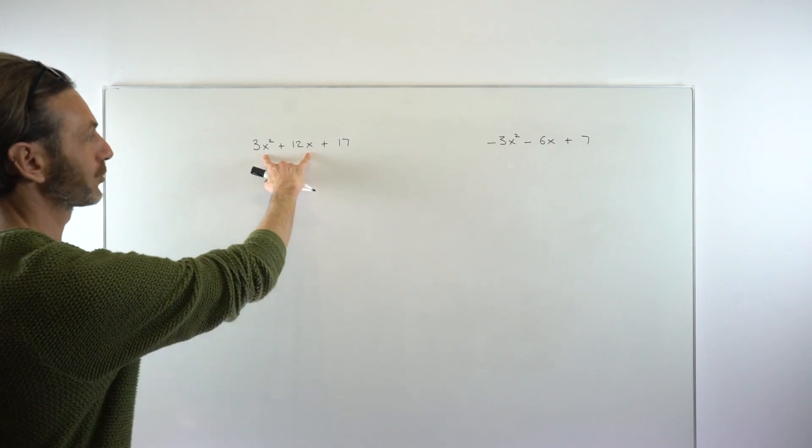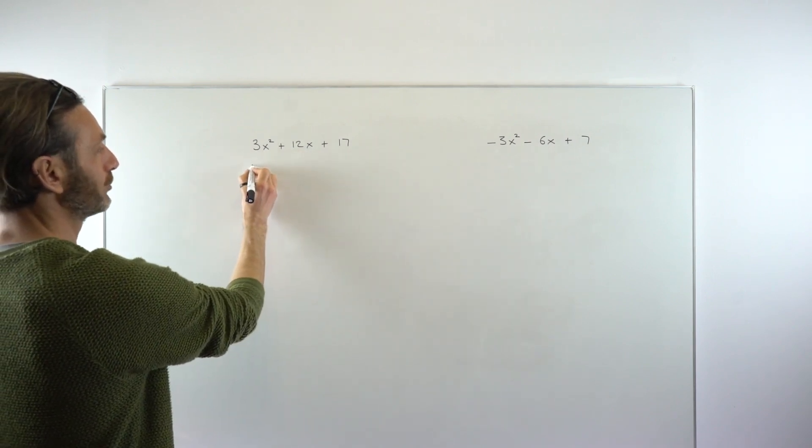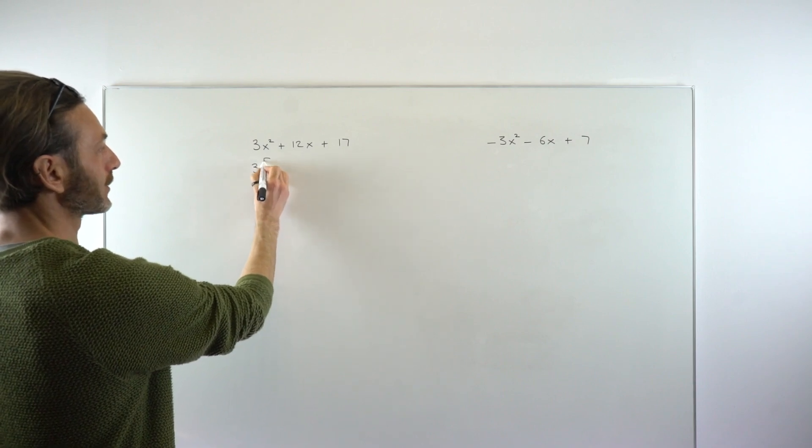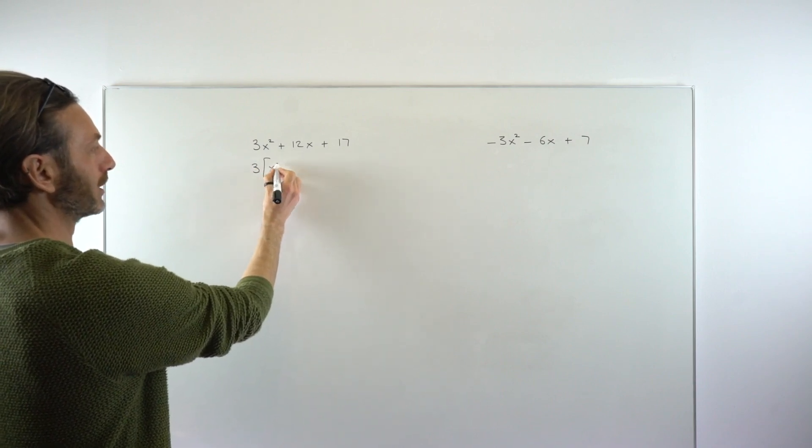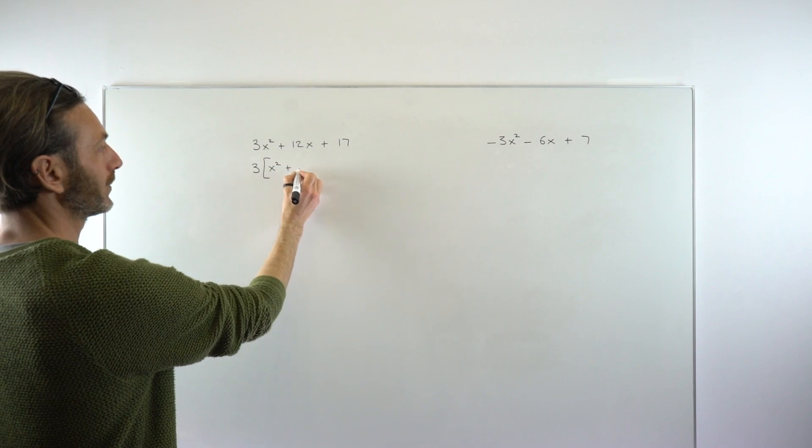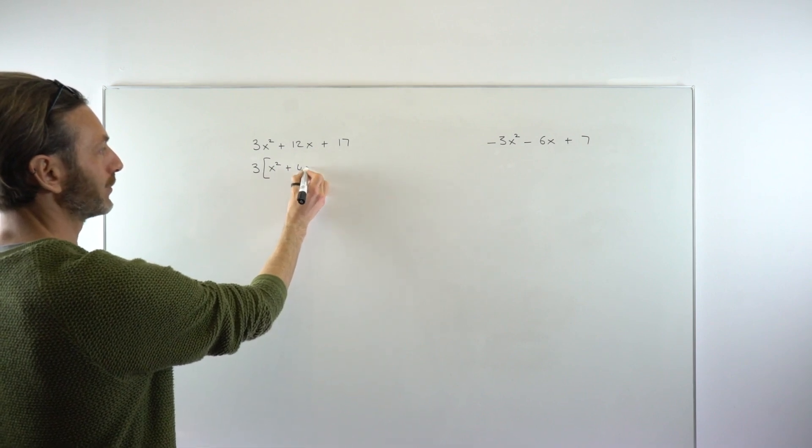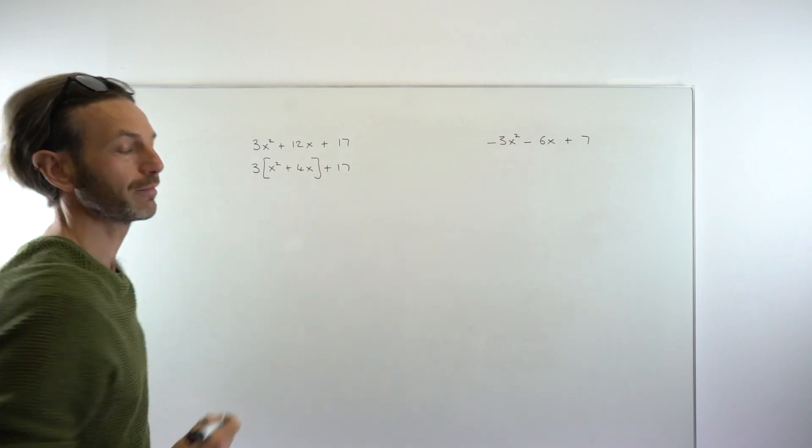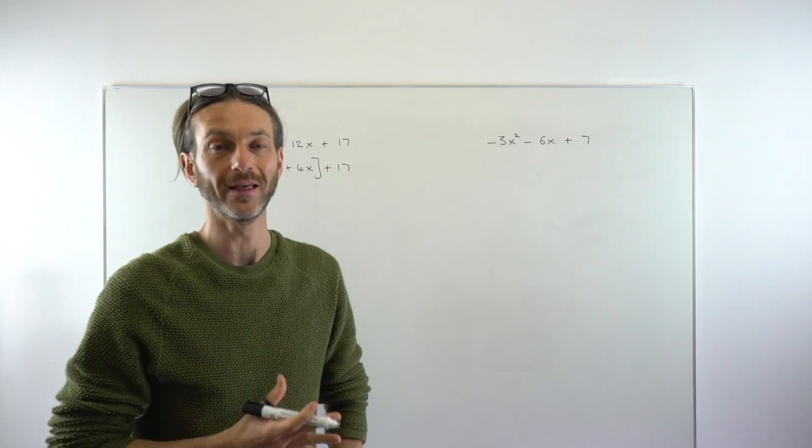Look for the common factor, but it's only the numerical common factor—we're ignoring the x common factor. The common factor here is three, so I'm going to pull out a three. I'm then going to use a square bracket: three bracket x squared plus 4x plus 17.